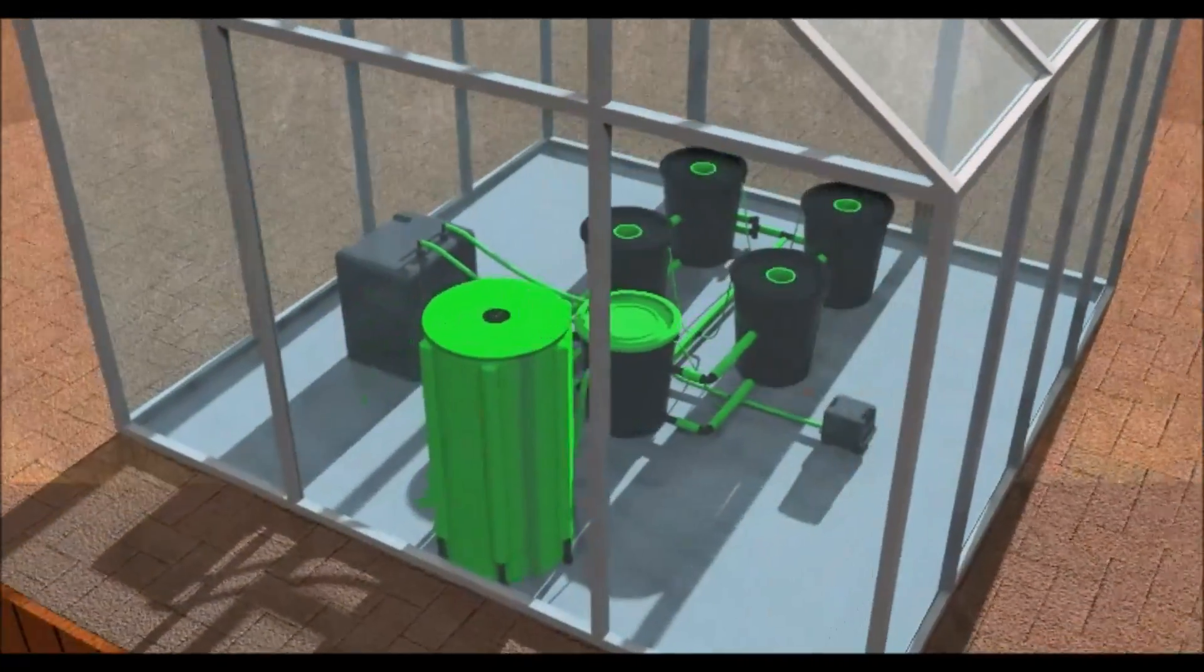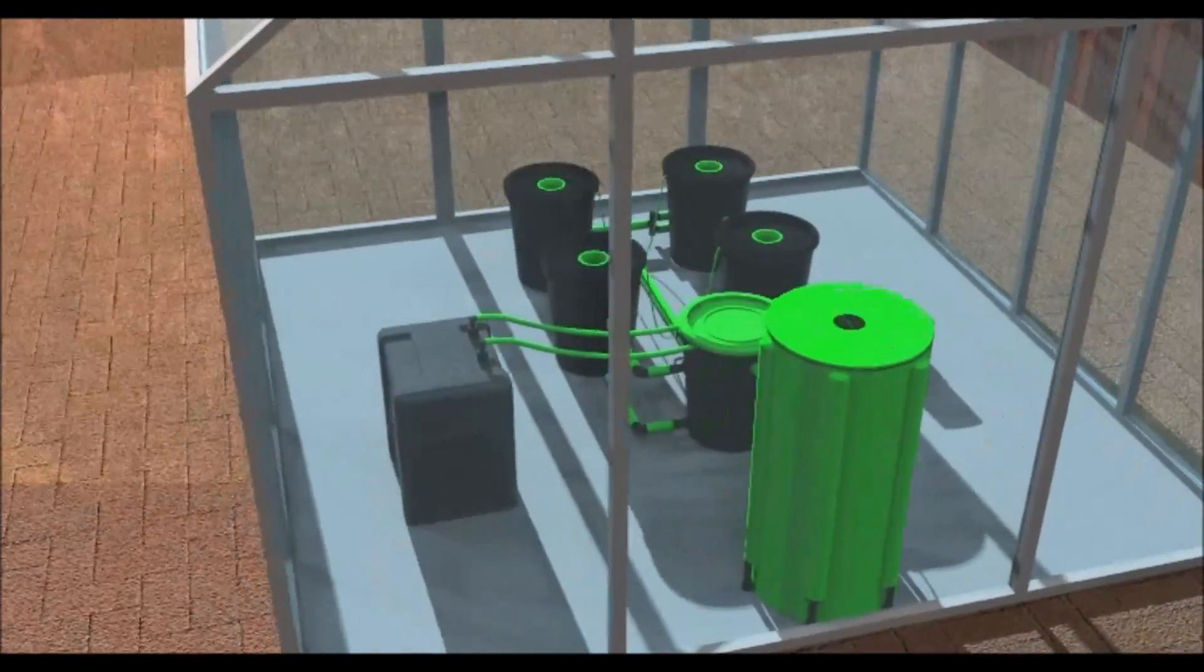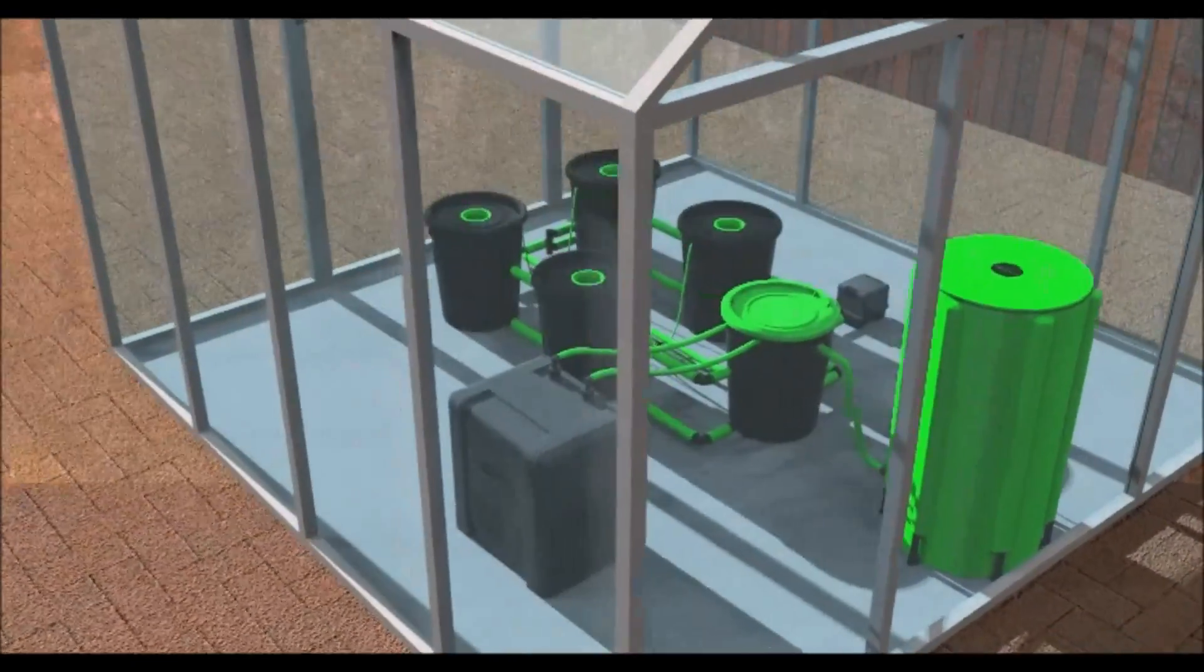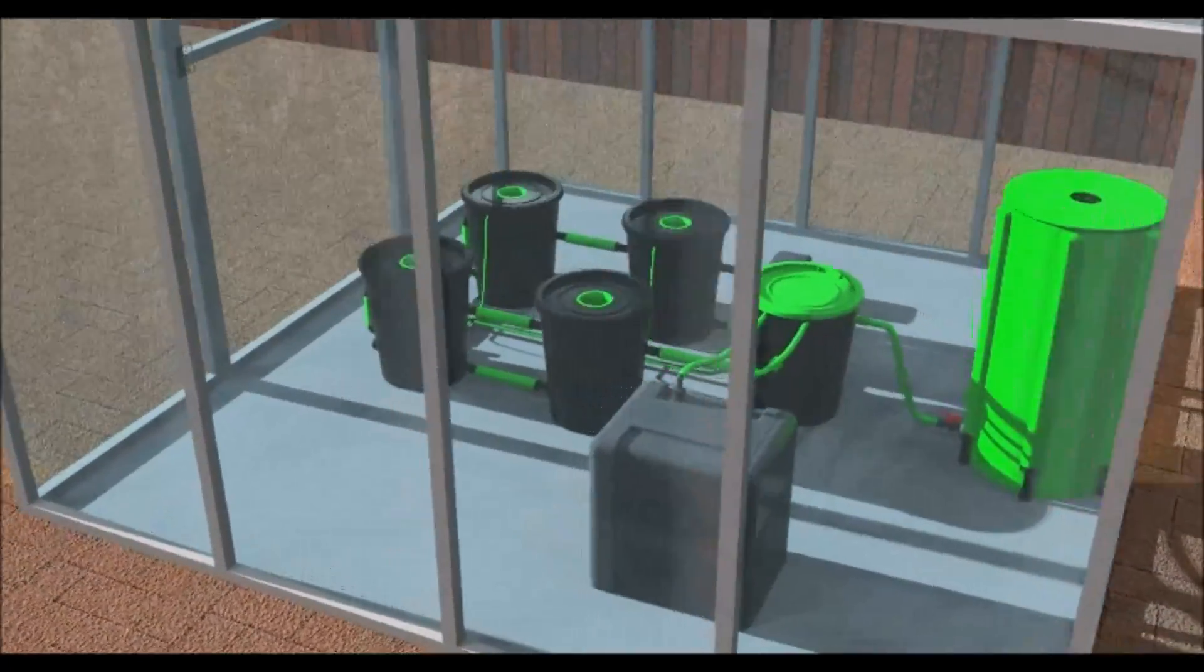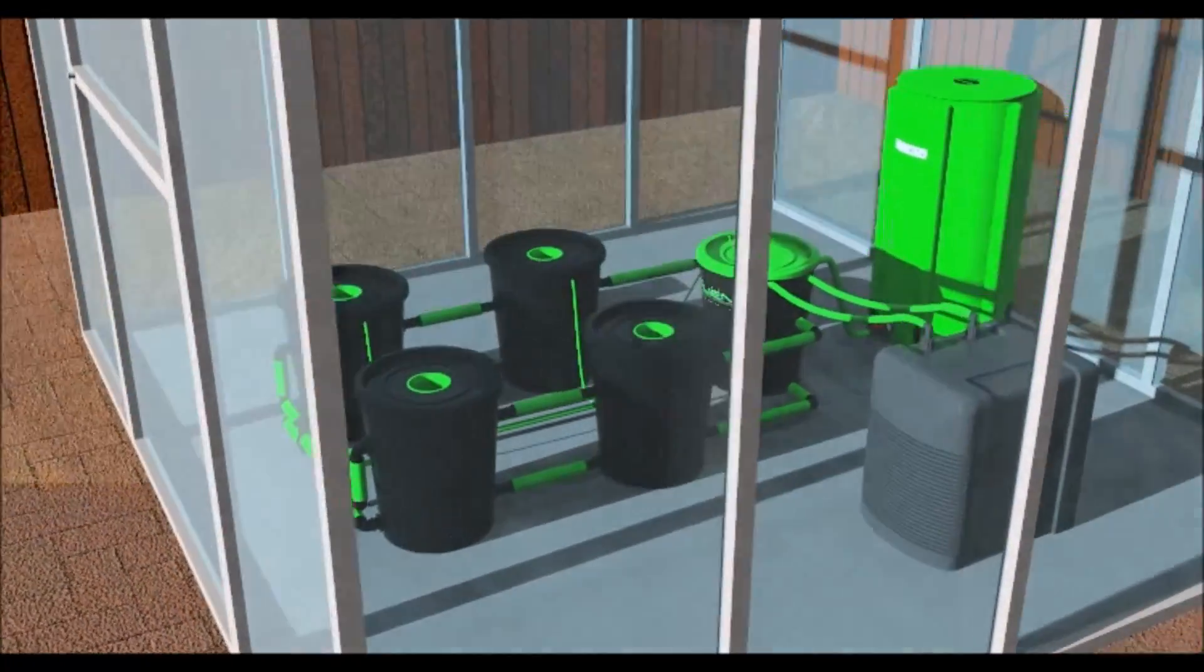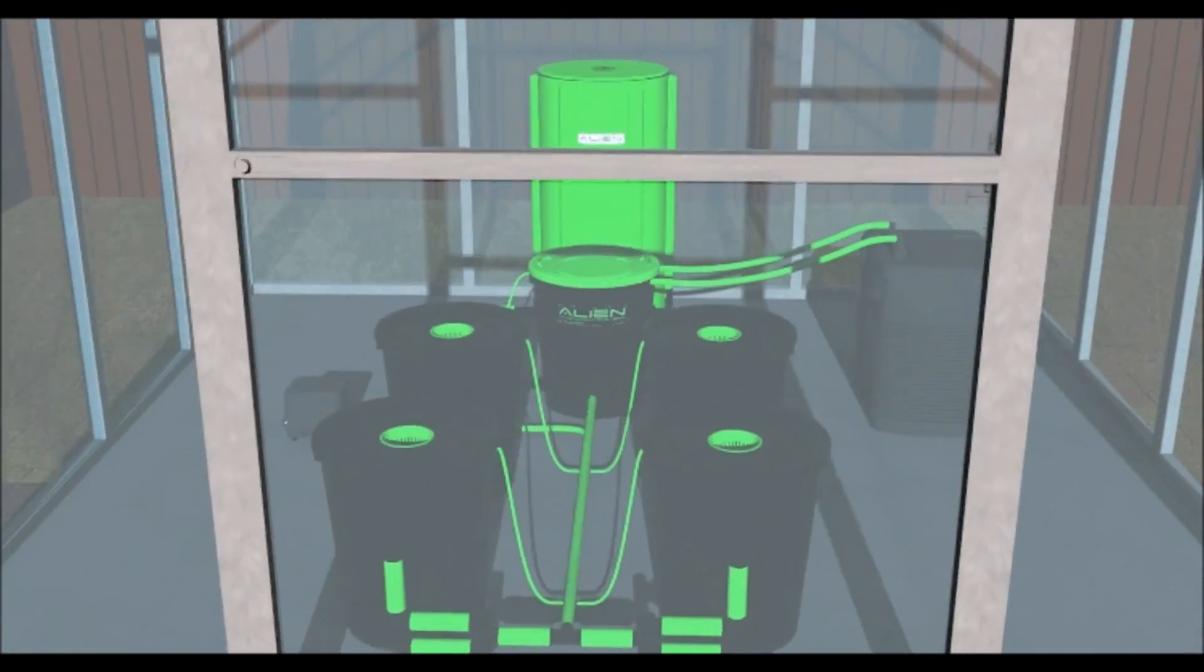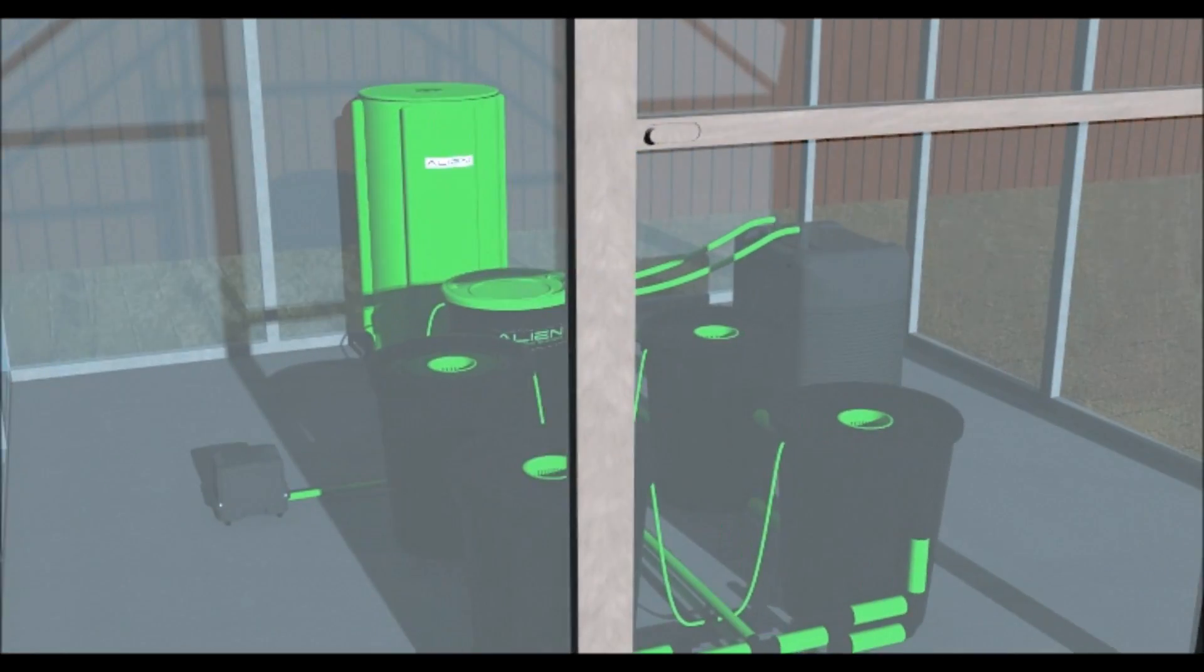The ideal nutrient solution temperature is between 18 and 20 degrees. At this temperature, it is far less likely your plants will contract a root disease. If your solution temperature rises above 24 degrees, then you should consider installing a water chiller. This will give you complete control over the temperature of your plant's roots.